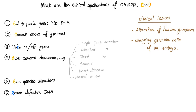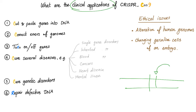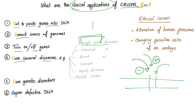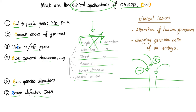So we were able to recognize the bad area in your DNA, cut it and replace it with good genes. What are the clinical applications of CRISPR-Cas9? Bazillion things: cut and paste genes into the DNA, correct the errors, turn on or off the genes — you can add something to turn it on or turn it off. Cure several diseases such as single gene disorders, inherited disorders, blood disorders, cancers, heart disease, and mental illnesses. Cure genetic disorders and repair defective DNA. There are also ethical questions around the alteration of human genomes and changing germline cells of an embryo.